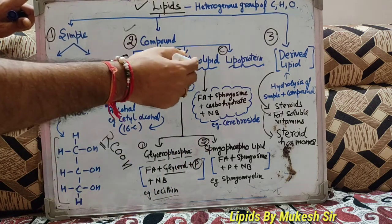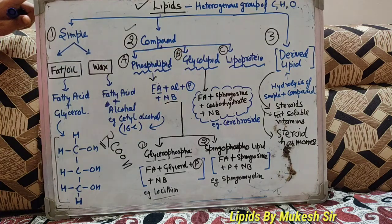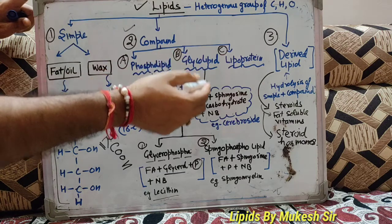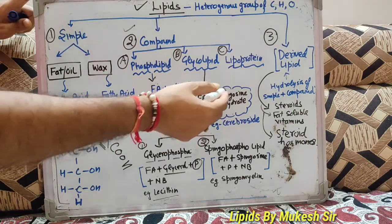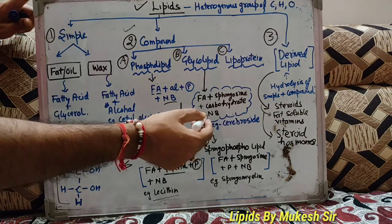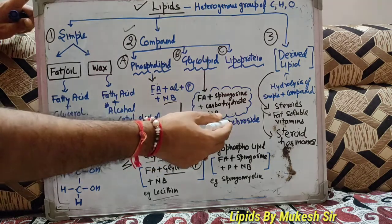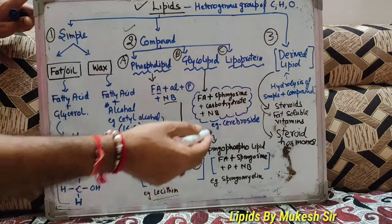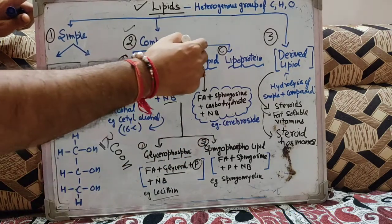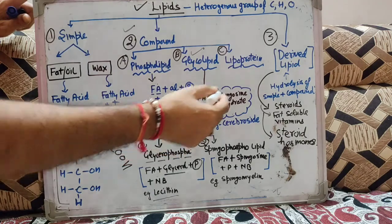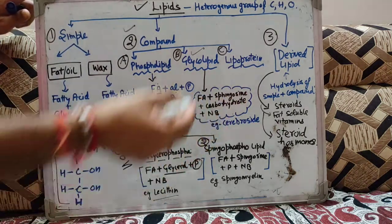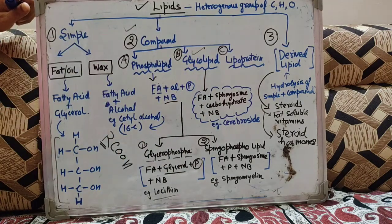Compound lipids के अंदर दूसरी category हमारे पास है glycolipids. Glycolipids किससे बने हैं — fatty acid, sphingosine, carbohydrate और nitrogen base से बने होते हैं. Example इसके पास हमारे पास आ जाएगा cerebroside — cerebroside is an example of glycolipid. So glycolipid: fatty acid, sphingosine, carbohydrate and nitrogen base से बने होते हैं.